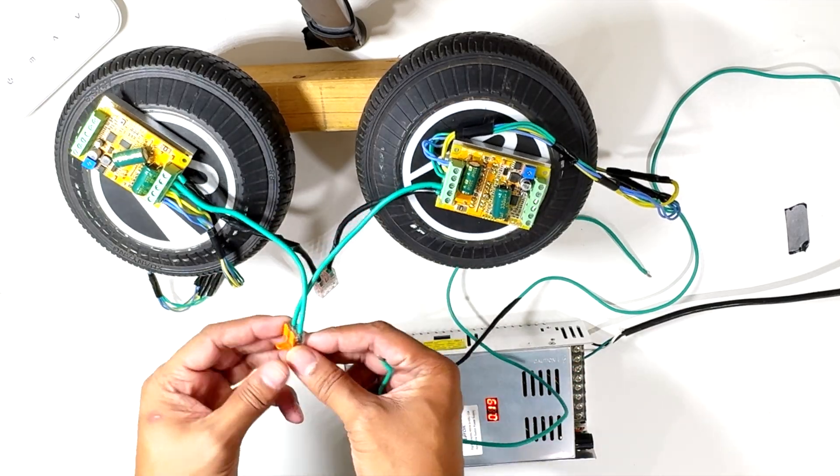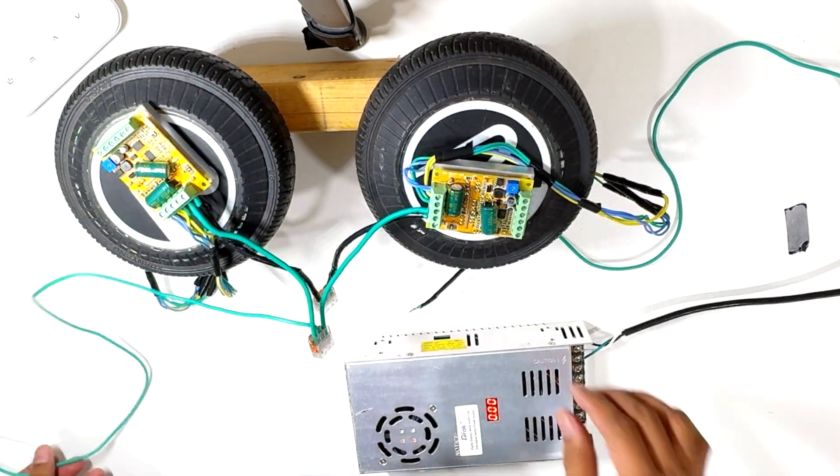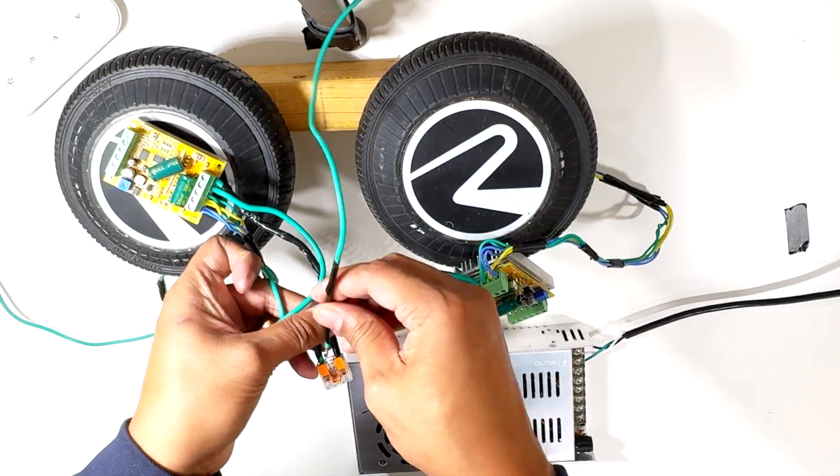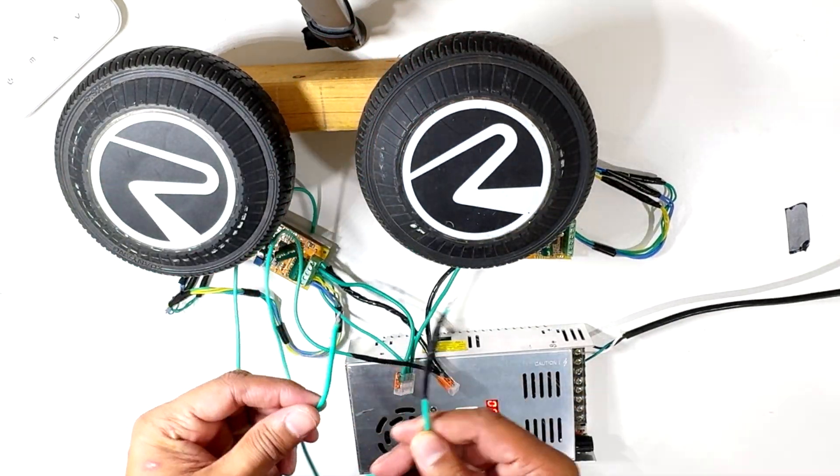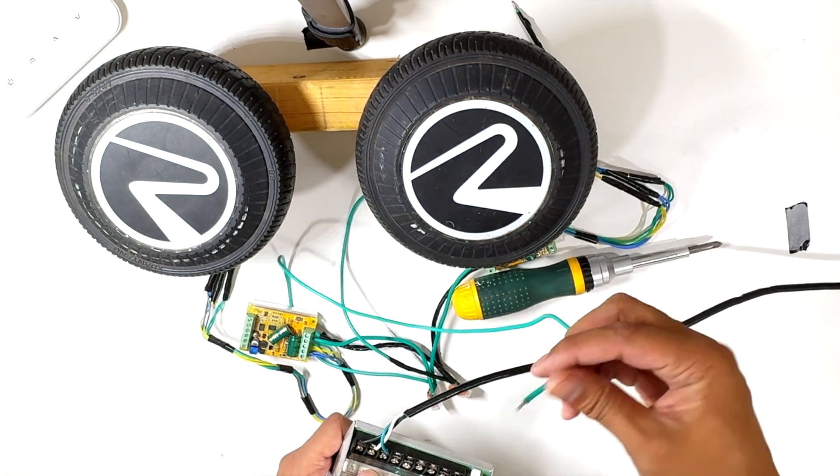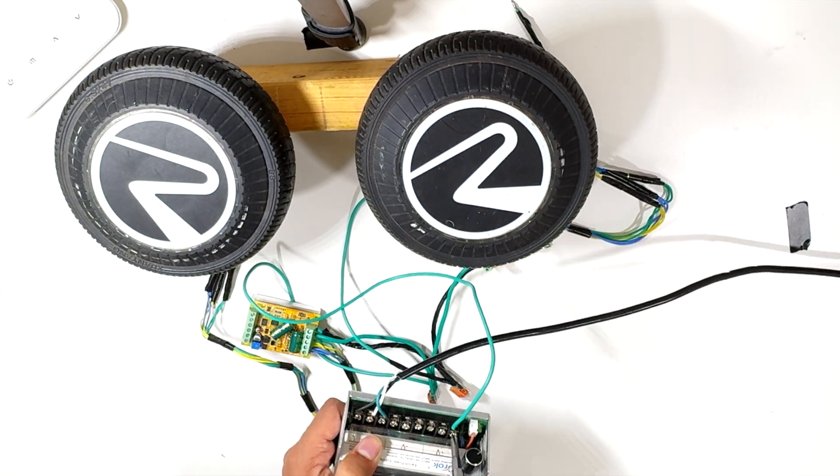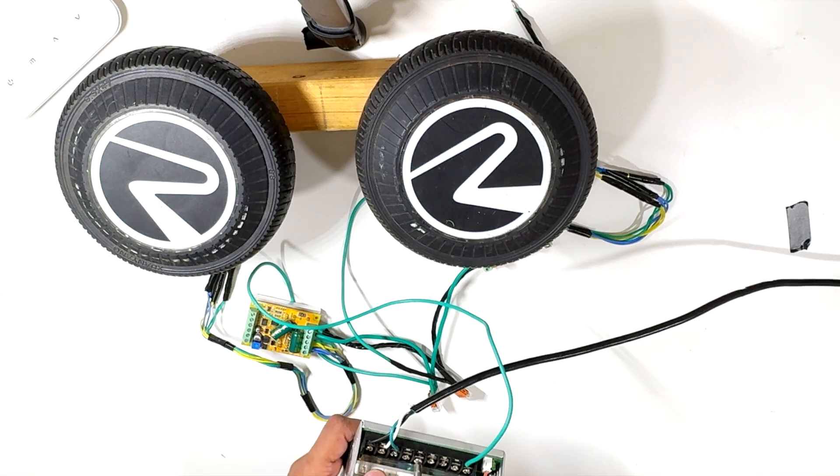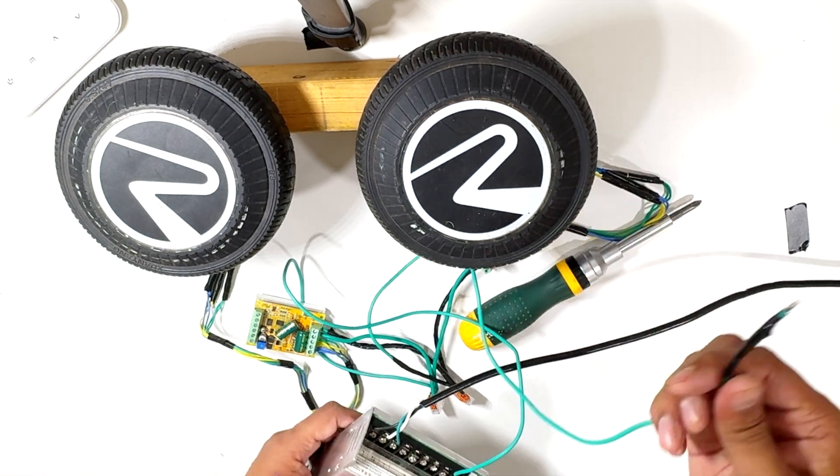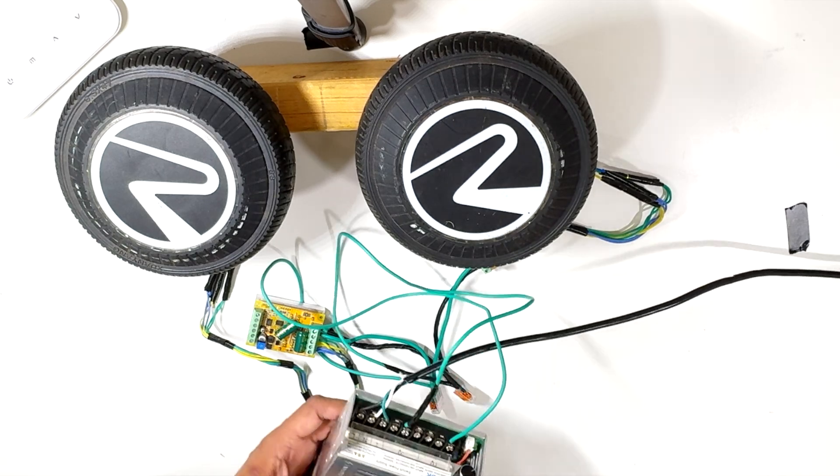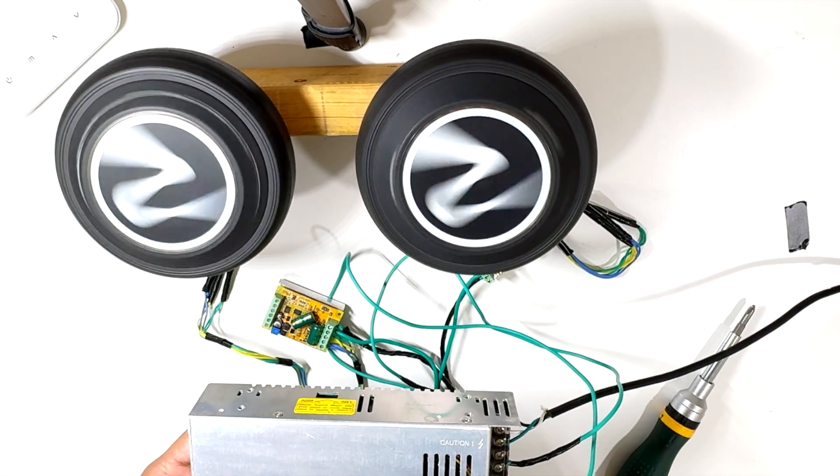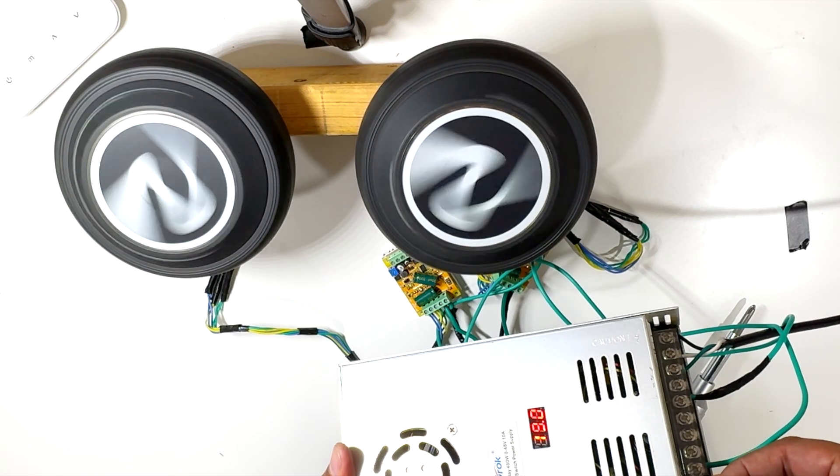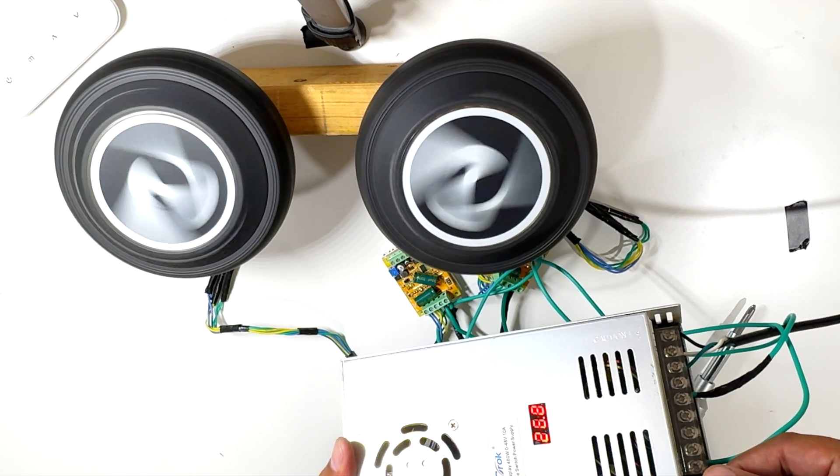Once everything is connected, we can connect a 42 volt DC power to the controller. For testing purposes, I am using an external variable DC power source. Later I will be using a 42 volt lithium battery pack which I have taken from the same hoverboard. Now let's power it up to see if the wheels are spinning. Yes, wheels are spinning nicely and responding well when we are increasing the input voltage.